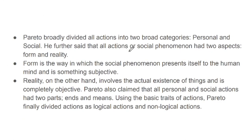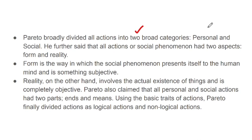Pareto broadly divided all actions into two broad categories. The first is personal activities or personal actions, and the second is social actions. He further said that all actions and social phenomena had two aspects: form and reality.